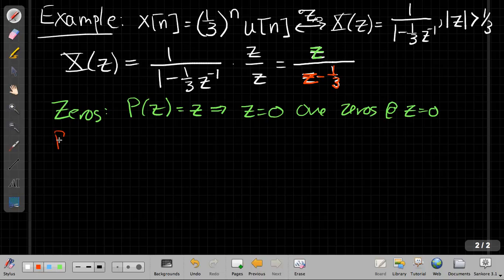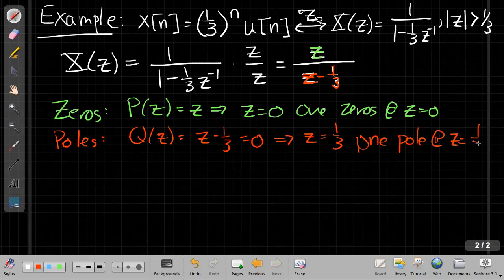For the poles, we look at the denominator polynomial. Q(Z) is equal to Z - 1/3, which we set equal to zero. This will be zero when Z is 1/3. So I have one pole at Z equals 1/3. These two things are related. It's not an accident that the region of convergence begins and ends at a pole. Regions of convergence are bounded by poles.